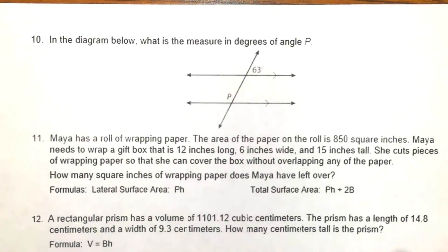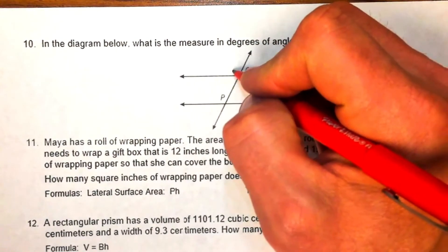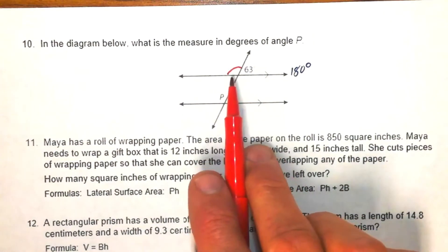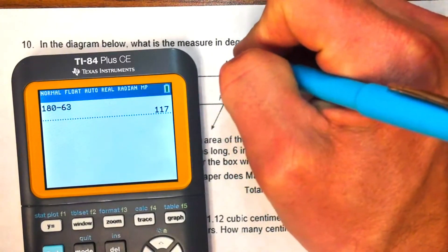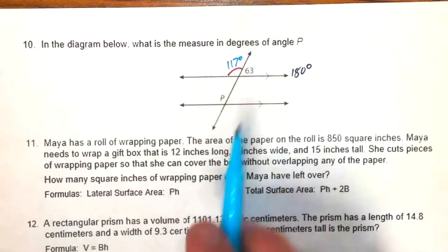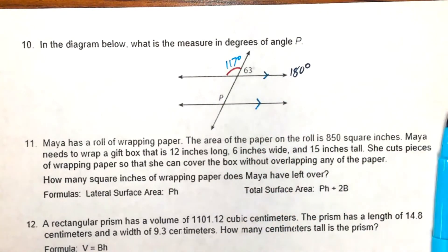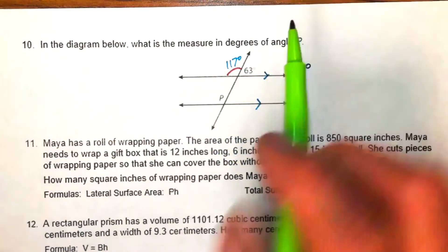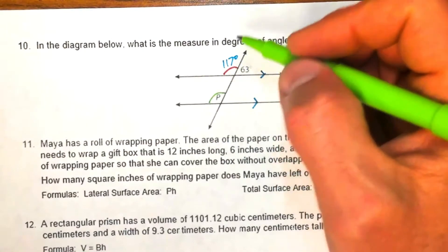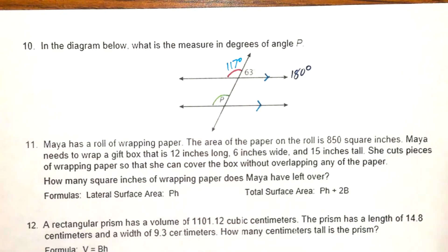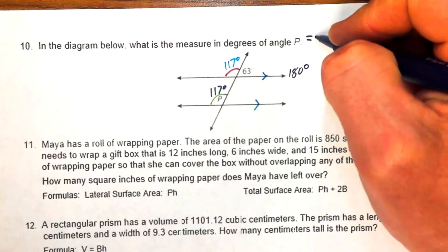Problem ten: find the measure of angle P. A straight line measures 180°. The angle adjacent to 63° is 180° − 63° = 117°. Angle P is interior to two parallel lines cut by a transversal. The 117° angle and angle P are corresponding angles, and corresponding angles are congruent. Therefore angle P = 117°.